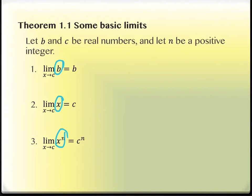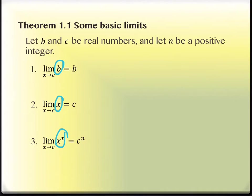The second one is the limit as x approaches c of x. So this is the equation like y equals x. So if x is approaching c, then y is approaching c, because x equals y with that equation. And the third one is x to the n, and we're going to justify this one a little bit more in a moment. For now, we recognize that if you can plug in the c for x, you can plug in c for x in the x to the n value as well.